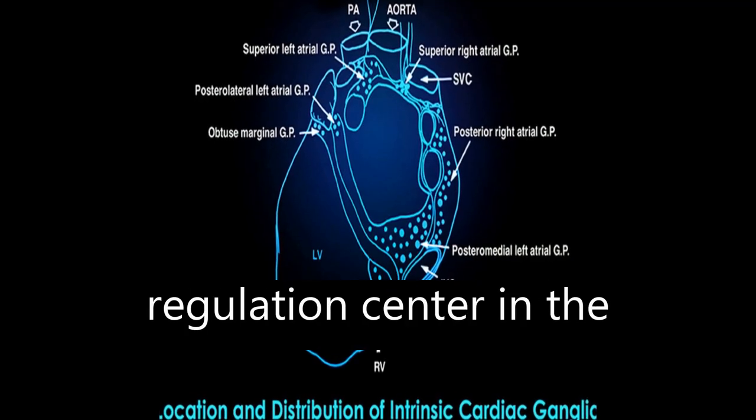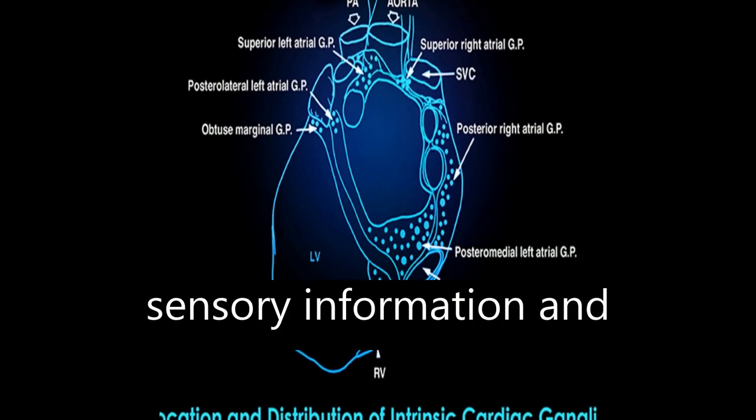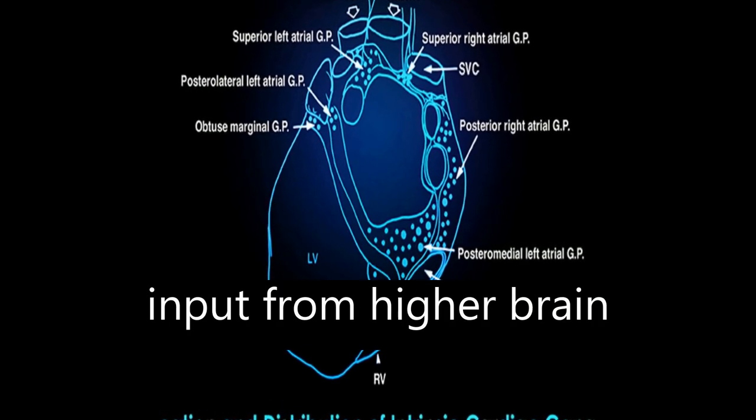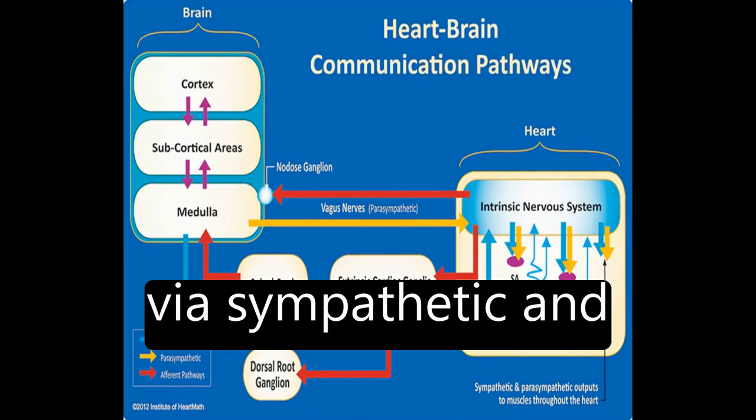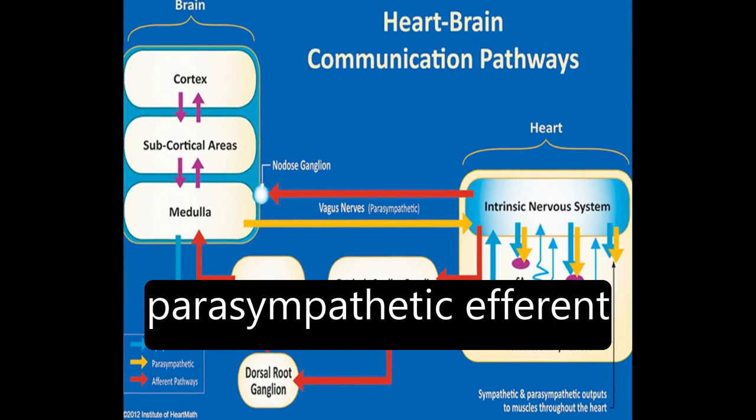The cardiovascular regulation center in the medulla integrates sensory information and input from higher brain centers to adjust heart rate and blood pressure via sympathetic and parasympathetic efferent pathways.